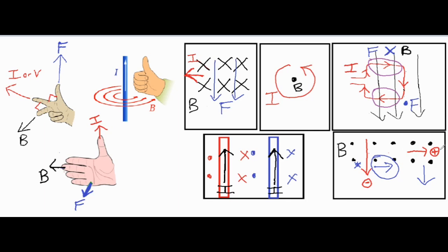For the positive charge, point the pointer finger to the right and twist your wrist down on the screen. Your middle finger points out of the screen, and once you get that situated your thumb is pointing downwards — matching the original force we found with the right palm rule.